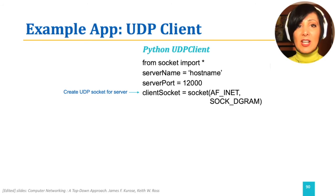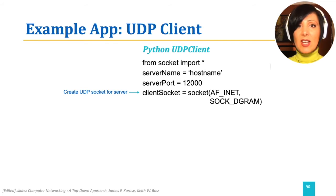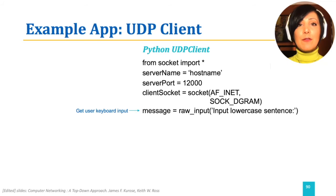Then the UDP socket is created. AF_INET defines the address family used, which is IPv4. And SOCK_DGRAM defines that this socket is a UDP socket. Then the message is received from the user by keyboard input.